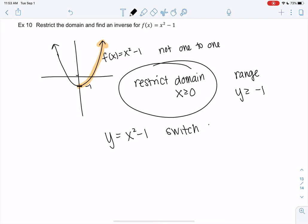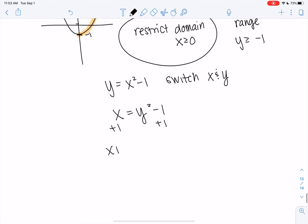So y equals x squared minus 1. Let's go ahead and switch them. And let's solve for y. So I'm going to go ahead and add one. x plus 1 equals y squared. And then this is where we get the issue, right? The square root and the square root. The square root of x plus 1 is the square root of x plus 1. But the issue with the square root of y squared is it equals the absolute value of y.